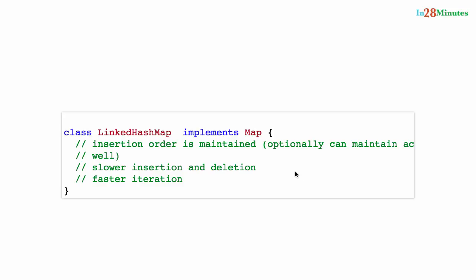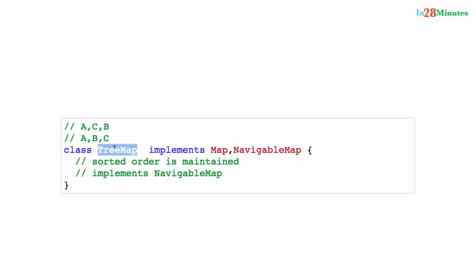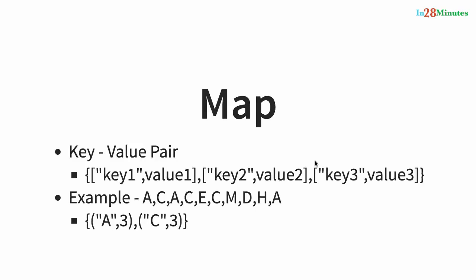The next map implementation is LinkedHashMap. Just like LinkedHashSet, the insertion order is maintained, but it's not sorted. Because of maintaining insertion order, it has slightly slower insertion and deletion than HashMap, but iteration is much faster because all elements have links to each other. The last important map implementation is TreeMap — the underlying data structure is a tree, so data is stored in sorted order.